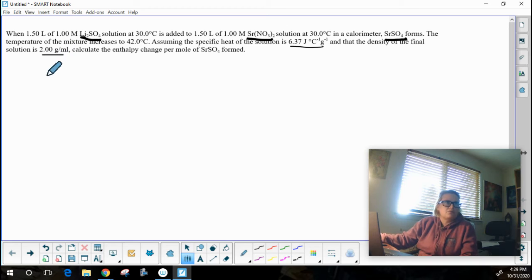Step 1 with any coffee cup calorimeter problem, write your balanced chemical equation. That's good for pretty much any problem in chemistry. So here's my lithium sulfate and here's my strontium nitrate.